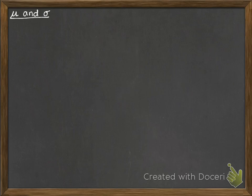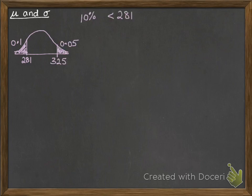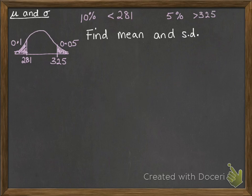What about if you're asked to find the mean and the standard deviation, both at the same time? For example, we've got a normal distribution curve. We're told that the lowest 10% sits below 281, the highest 5% sits above 325, and we want to find the mean and the standard deviation.